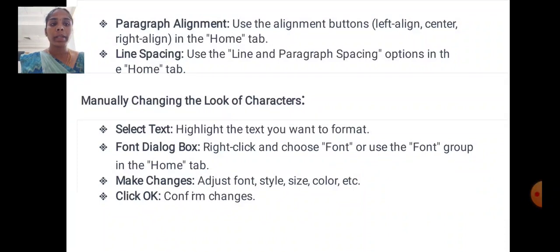Manually changing the look of characters. Select text: highlight the text you want to format. Font dialog box: right click and choose font or use the font group in the home tab. Make changes: adjust font style, size, color, etc. Click OK: confirm changes.